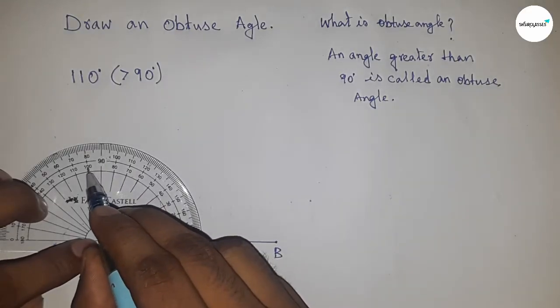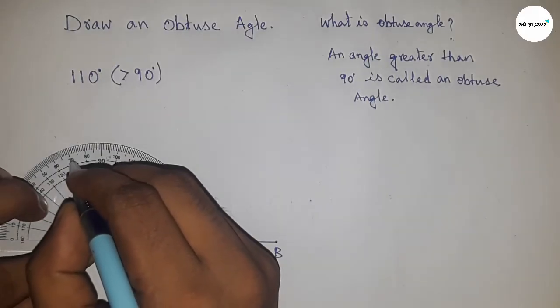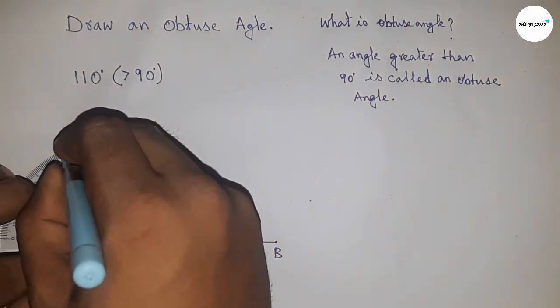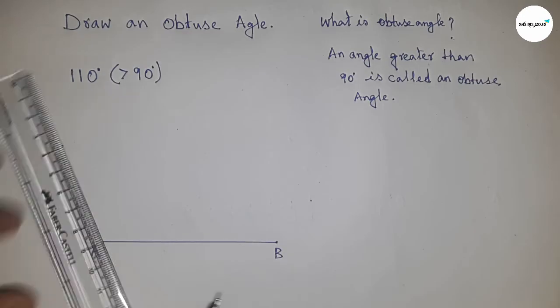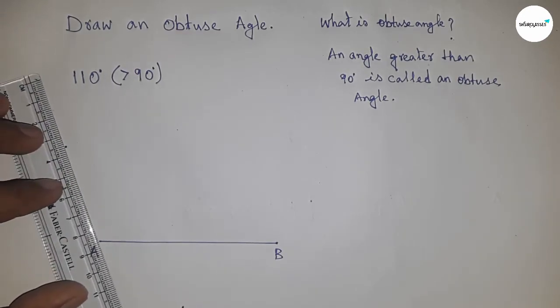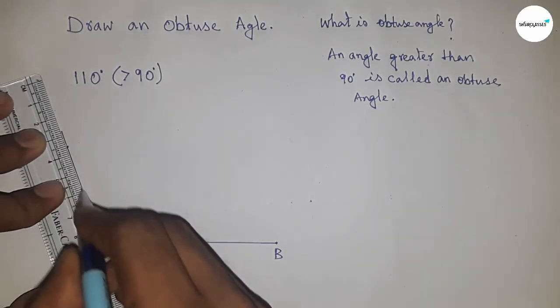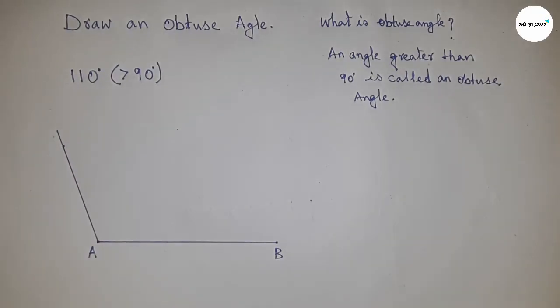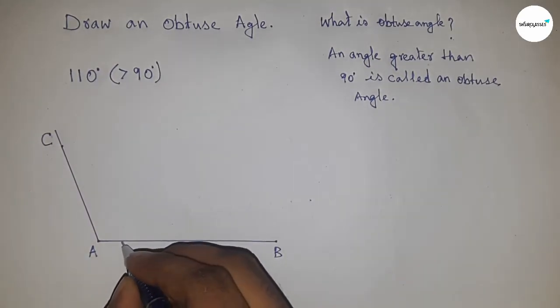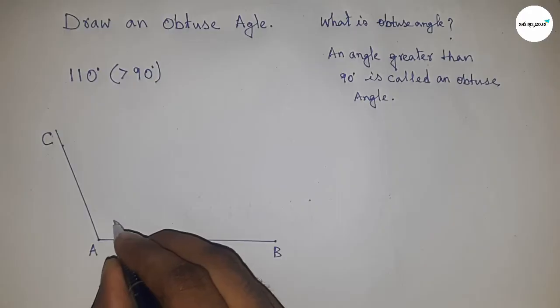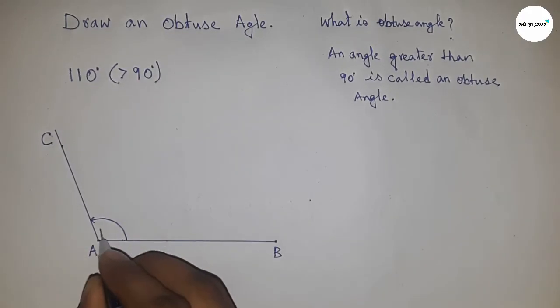This is 110 degrees. So this is 110 degrees, so joining this and taking this as point C. So angle BAC equals 110 degrees and it is obviously an obtuse angle.